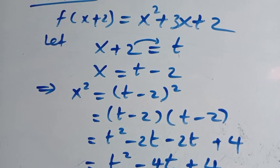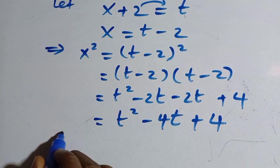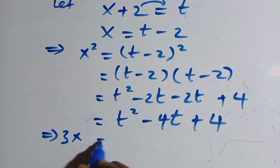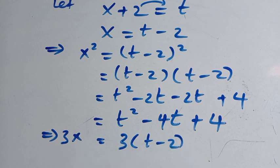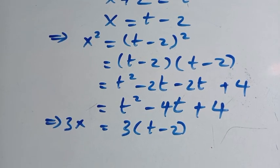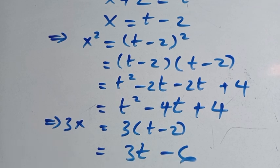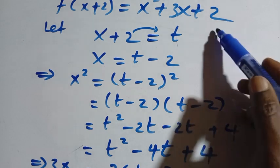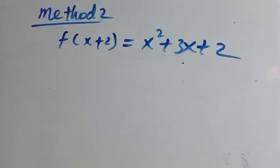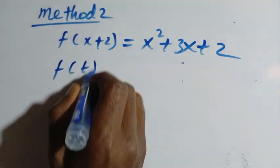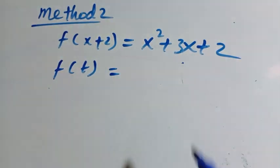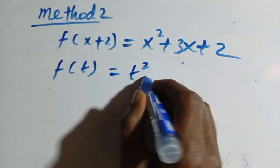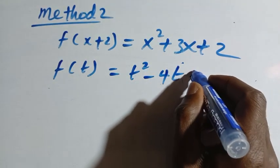And also from here, we need 3x. Since we already know our x, we need to find 3x as well. Our 3x is 3 times bracket t minus 2, and this gives us 3t minus 6. While the last term is a constant value of 2, we don't need to replace it with anything. Then let's substitute back into the given equation. So f of t equals x squared, which is t squared minus 4t plus 4.